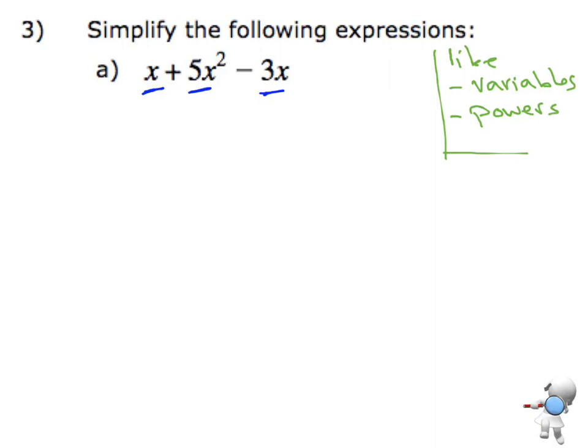So for example, all of these three pieces have an x in them. However, the first piece is just x, the second piece is x to the power of 2, and the third one is an x. So they have to be exactly the same powers.